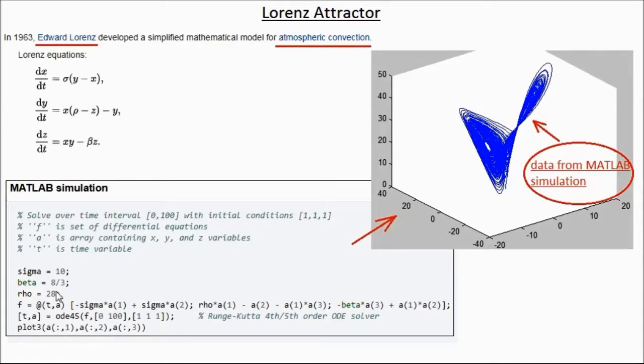So for the choice shown here, sigma, beta, and rho being these three values, the integration of this produces this data which is shown here. This is the data from the MATLAB simulation.